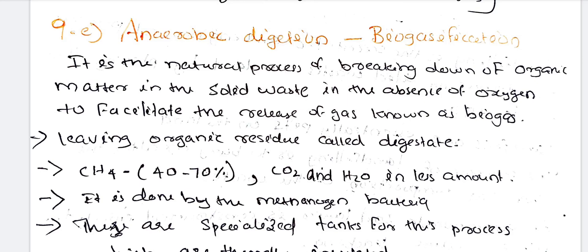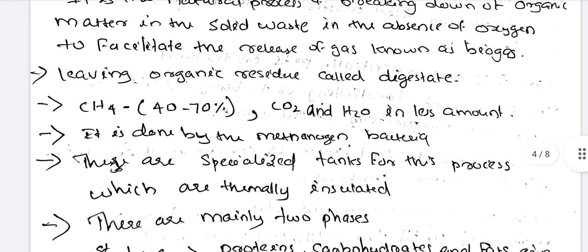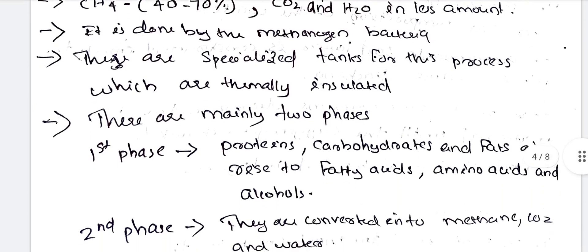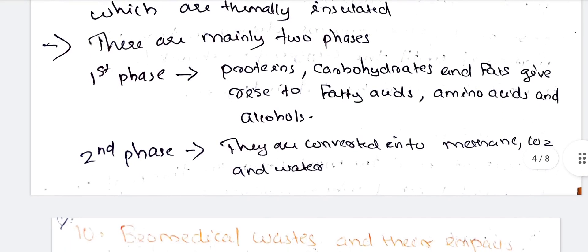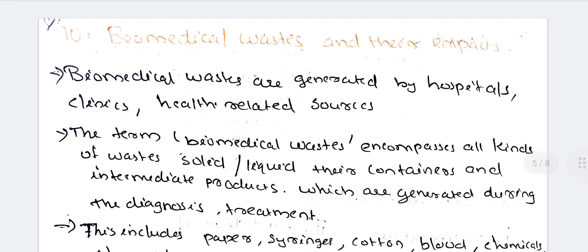In biogas formation, organic matter is broken down in the absence of oxygen. The main biogas component is methane. An organic residue called digestate is also left behind. CO2 and H2O are produced in lesser amounts. This is done by methanogen bacteria in thermally insulated tanks. There are two phases: phase one — proteins, carbohydrates and fats give rise to fatty acids, amino acids and alcohols; phase two — these are converted into methane, CO2 and water (biogas).